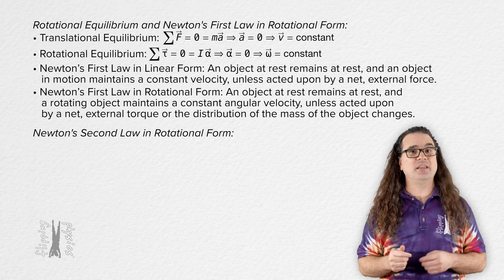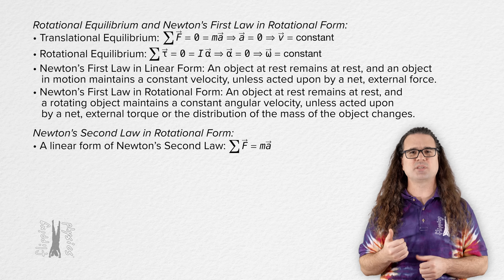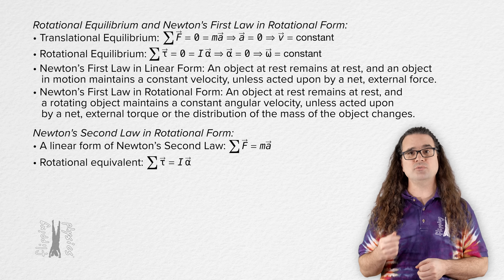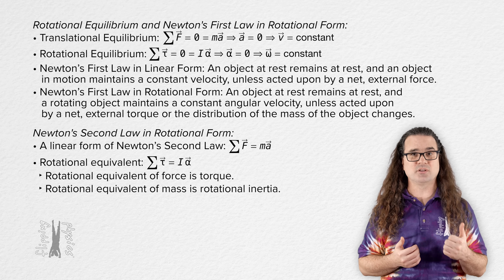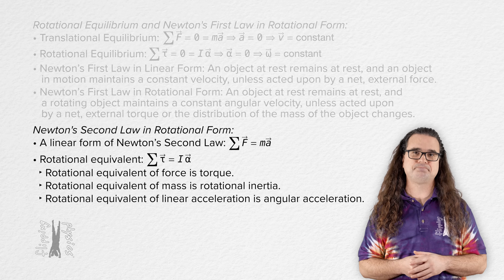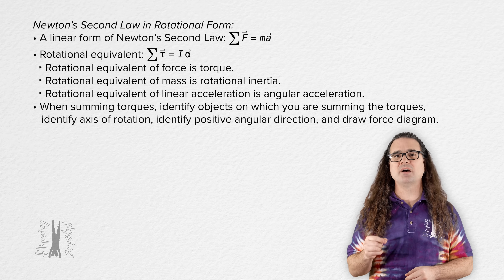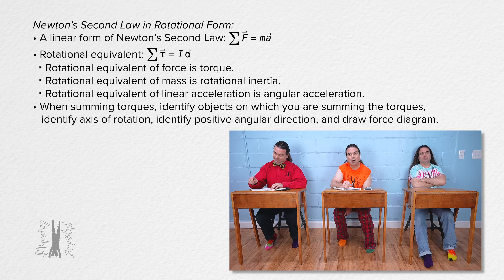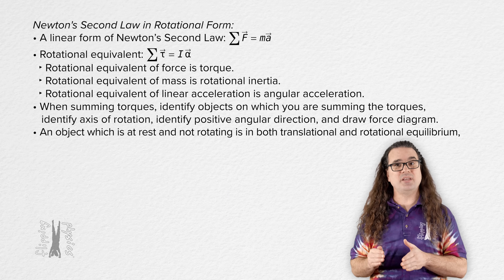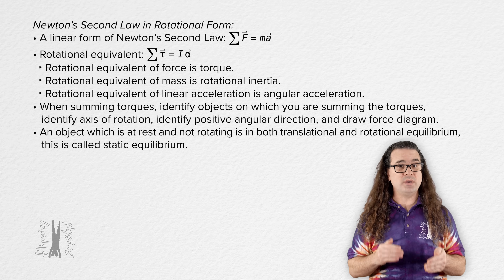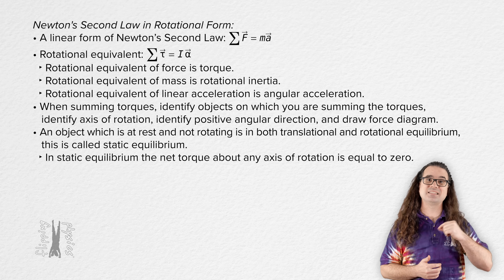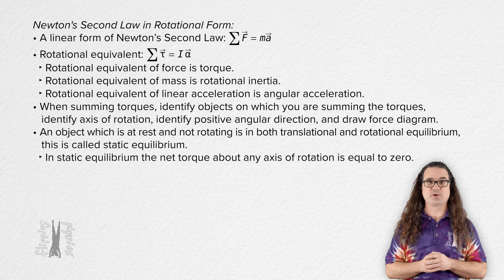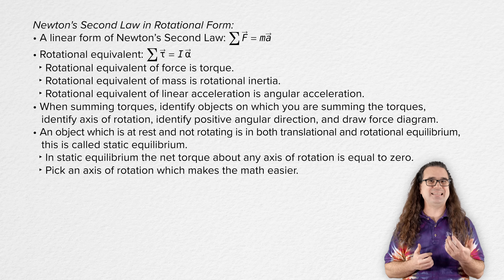Now let's talk about Newton's second law in rotational form. The linear form is net force equals mass times acceleration. The rotational equivalent is net torque equals rotational inertia times angular acceleration. From this, the rotational equivalent of force is torque, the rotational equivalent of mass is rotational inertia, and the rotational equivalent of linear acceleration is angular acceleration. When summing torques about an object, you must first identify the object, the axis of rotation, and the positive angular direction, then draw a force diagram. An object which is at rest and not rotating is in both translational and rotational equilibrium — what we call static equilibrium — and the net torque about any axis of rotation equals zero. We pick an axis of rotation which makes the problem mathematically easier to solve.